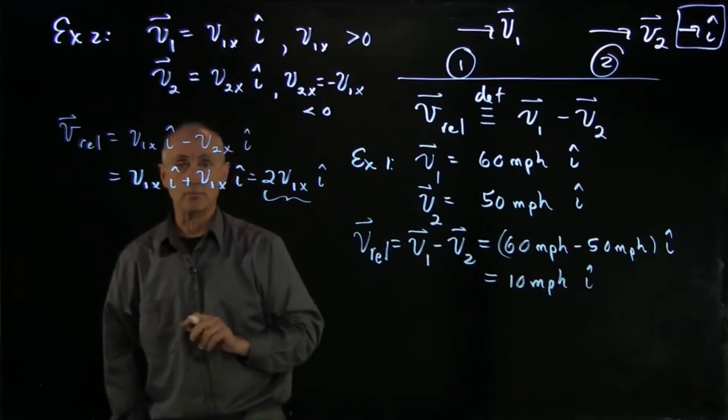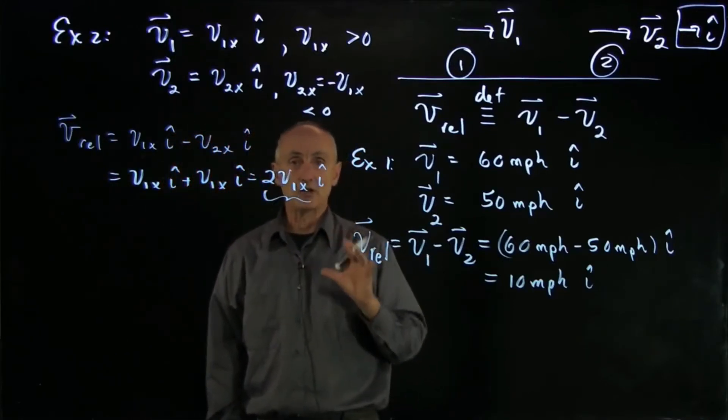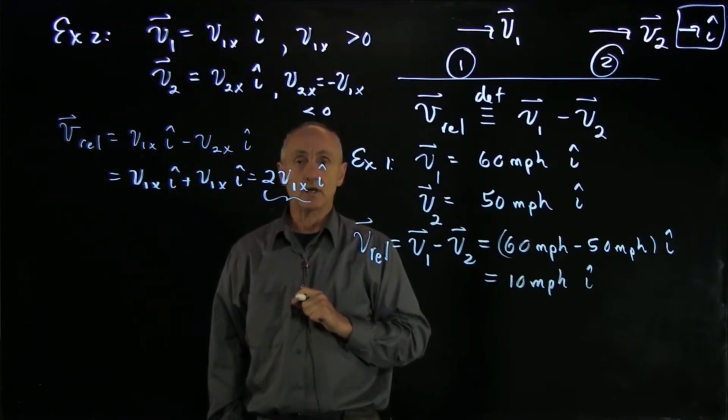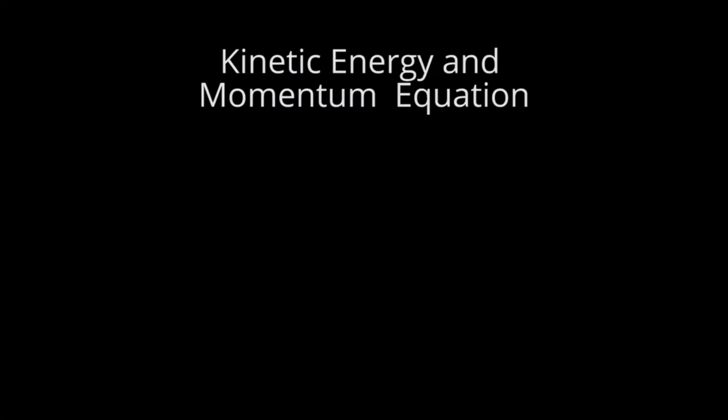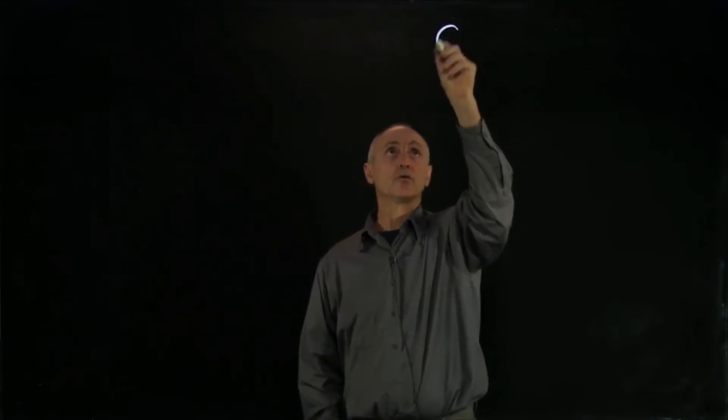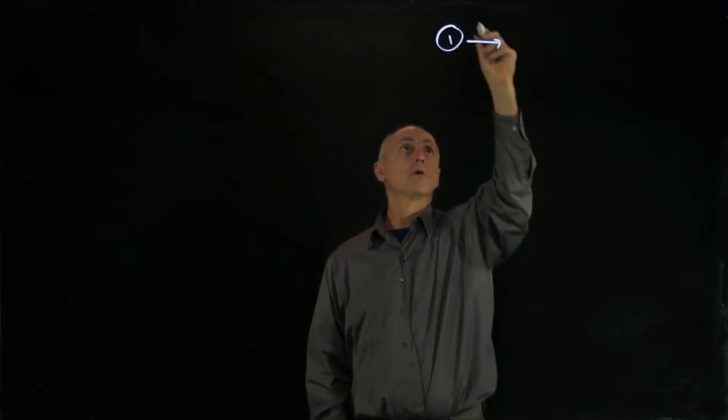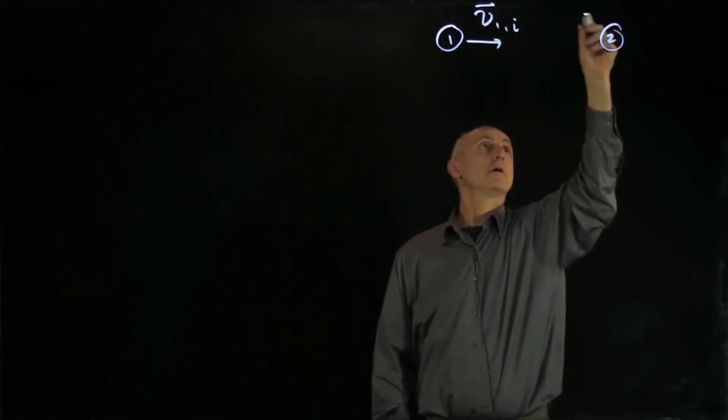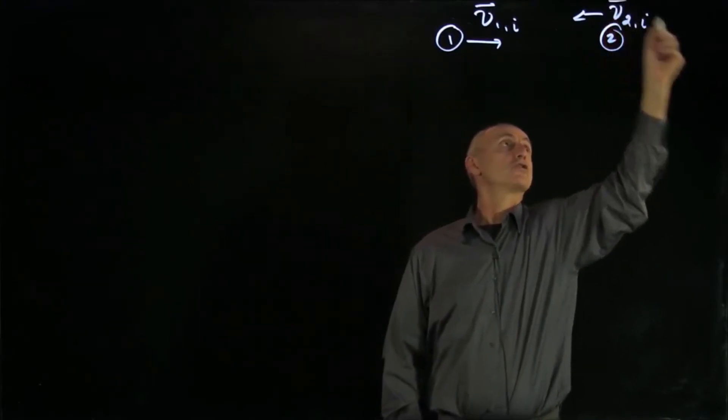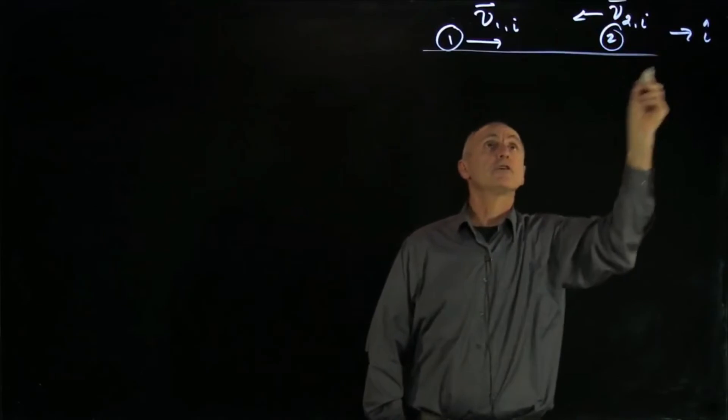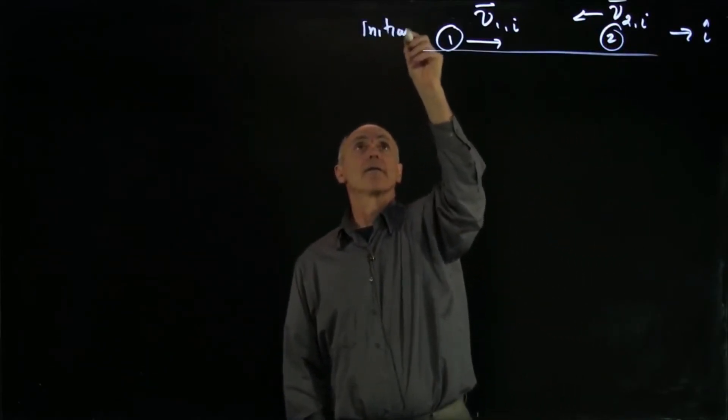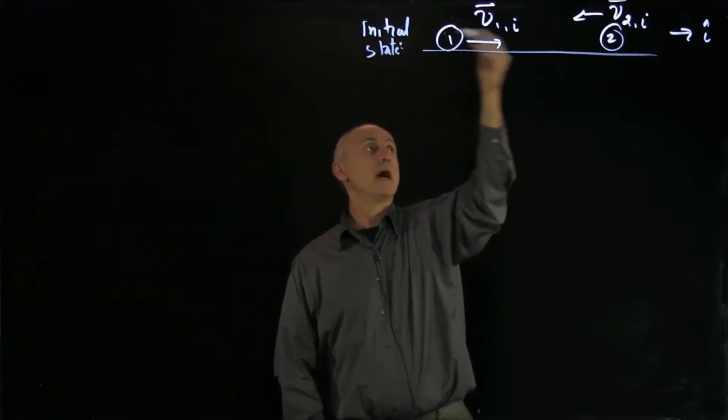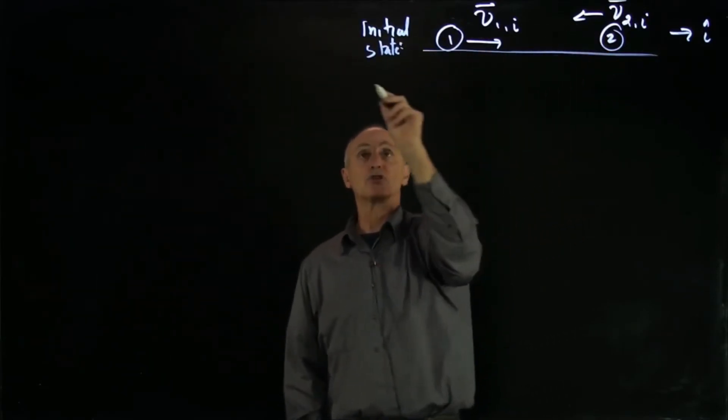Now, this relative velocity concept, we'll add a new way of thinking about elastic collisions with no external forces in one dimension. So we're going to return to our one-dimensional elastic collision with no external forces. So we have object 1 moving with velocity v1 initial, and object 2, maybe it's moving this way with v2 initial i-hat, again on a frictionless surface. And we'll call that our initial state.